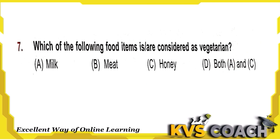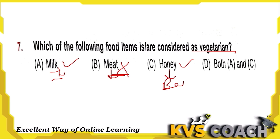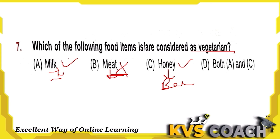Question 7: Which of the following food items are considered vegetarian? Milk is vegetarian; meat is non-vegetarian; honey is vegetarian. Milk we get from cows, buffaloes, and goats; honey we get from bees. Although all are animal products, milk and honey are considered vegetarian. So A and C are both the right answers.